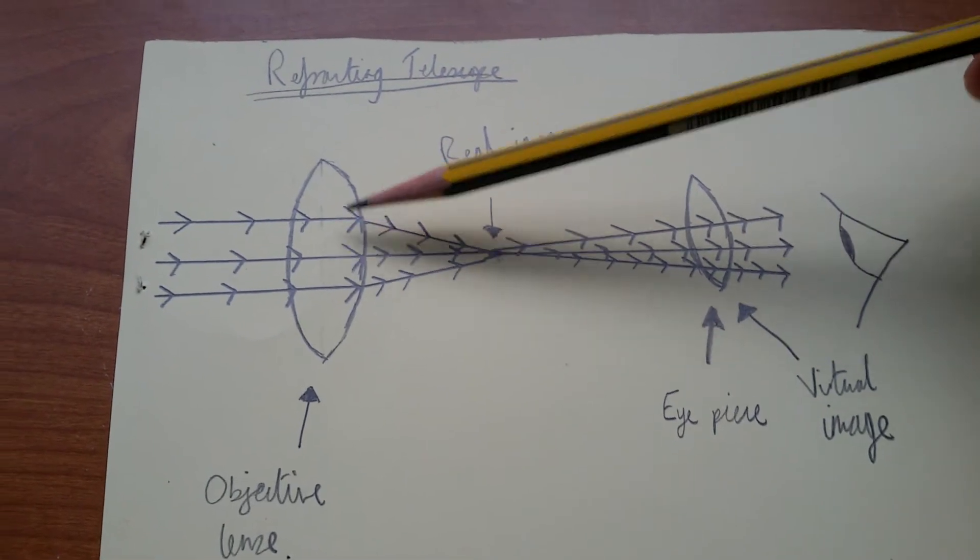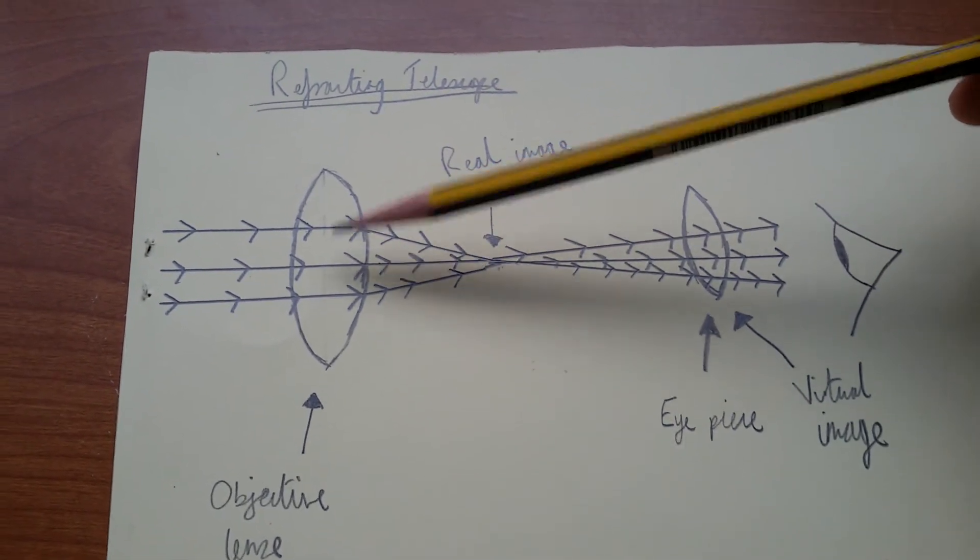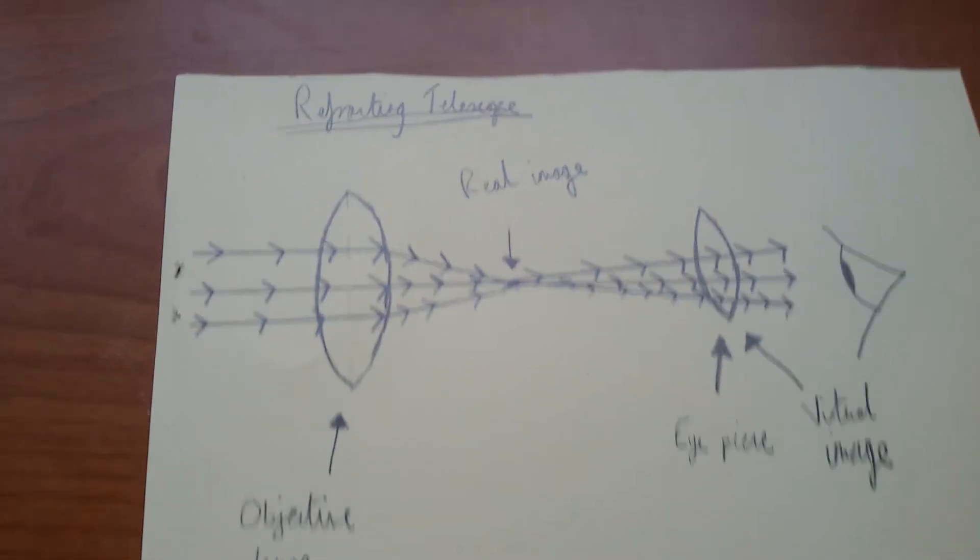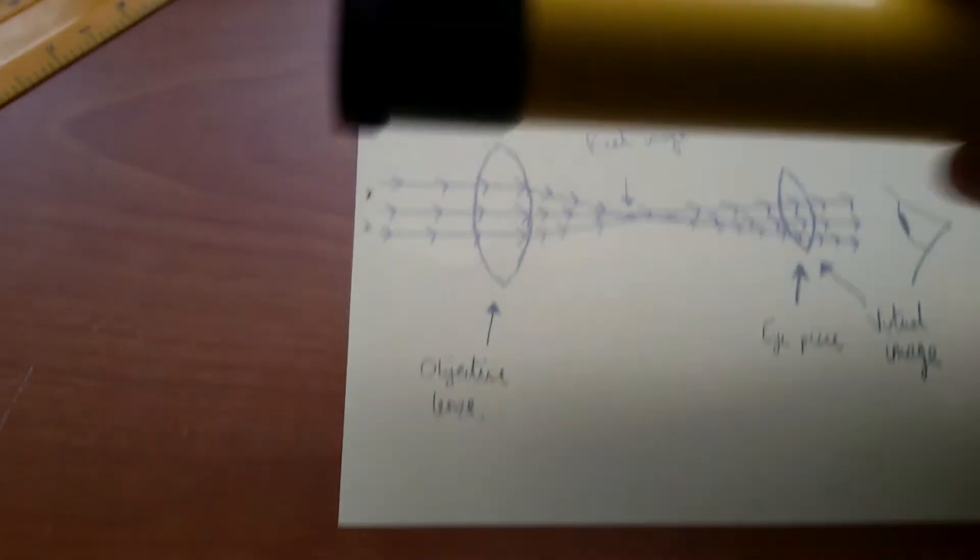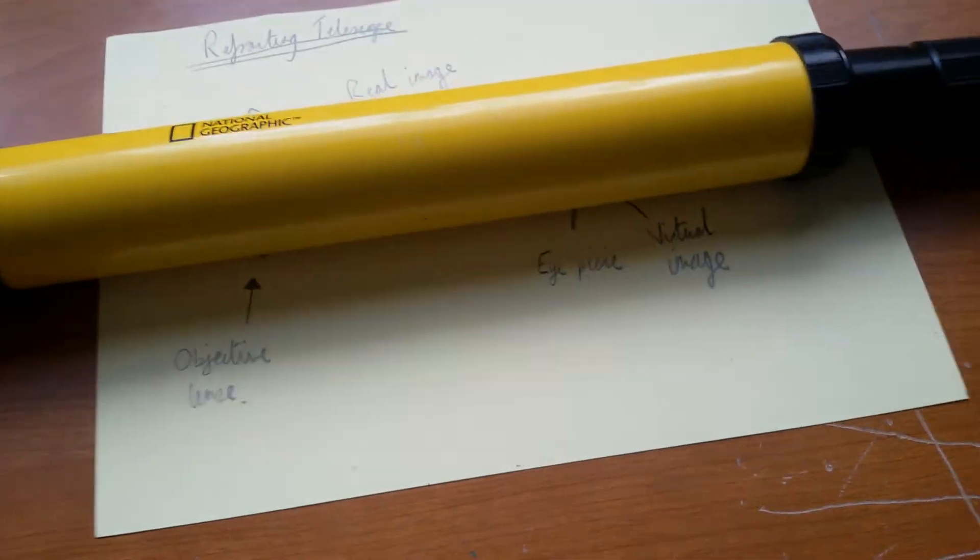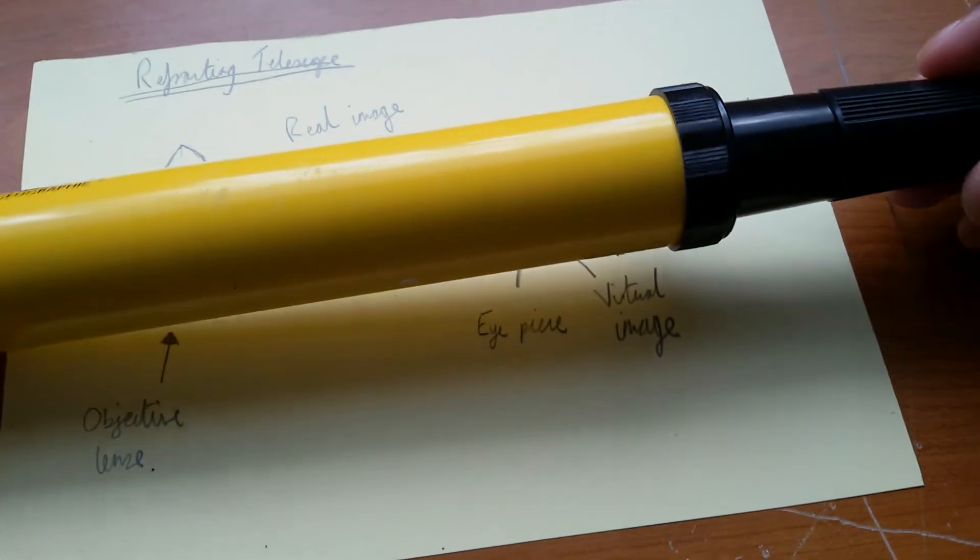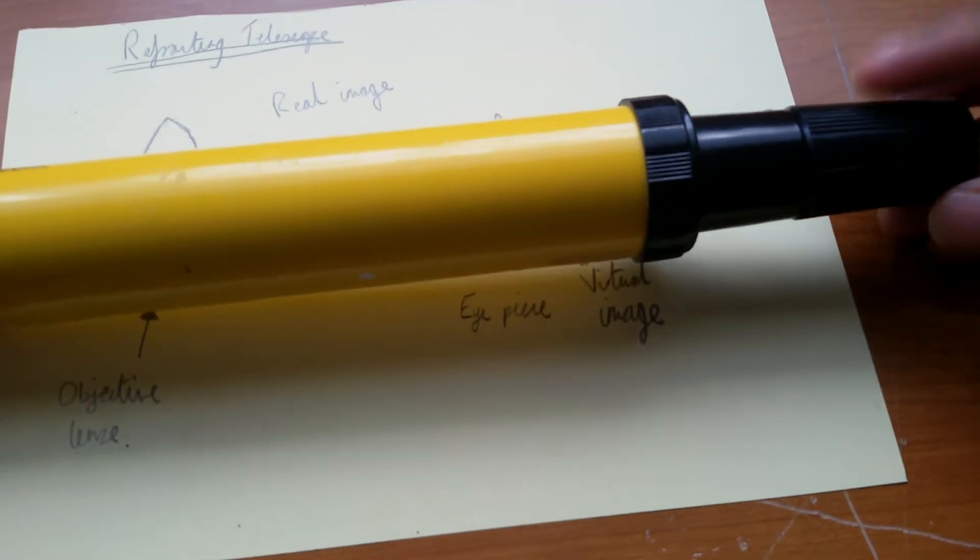The objective lens is closer towards the end, this is closer towards your eye. So here I have an example, so here is the telescope. The objective lens will be around there and the eyepiece will be around here.